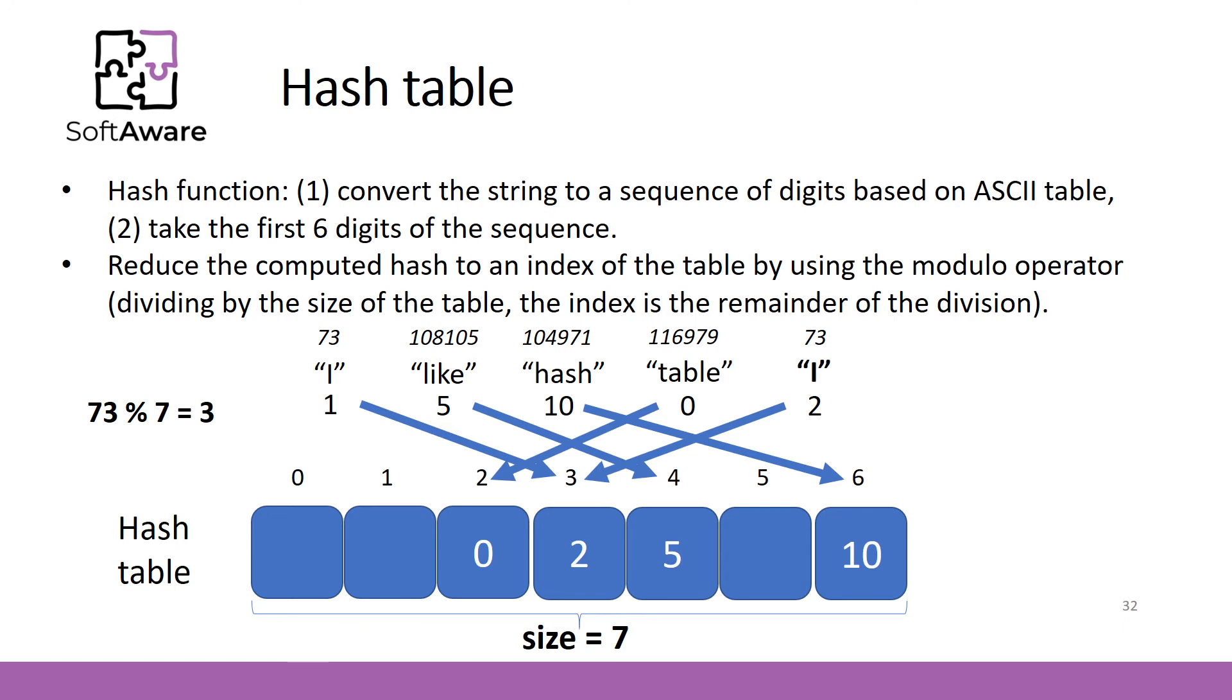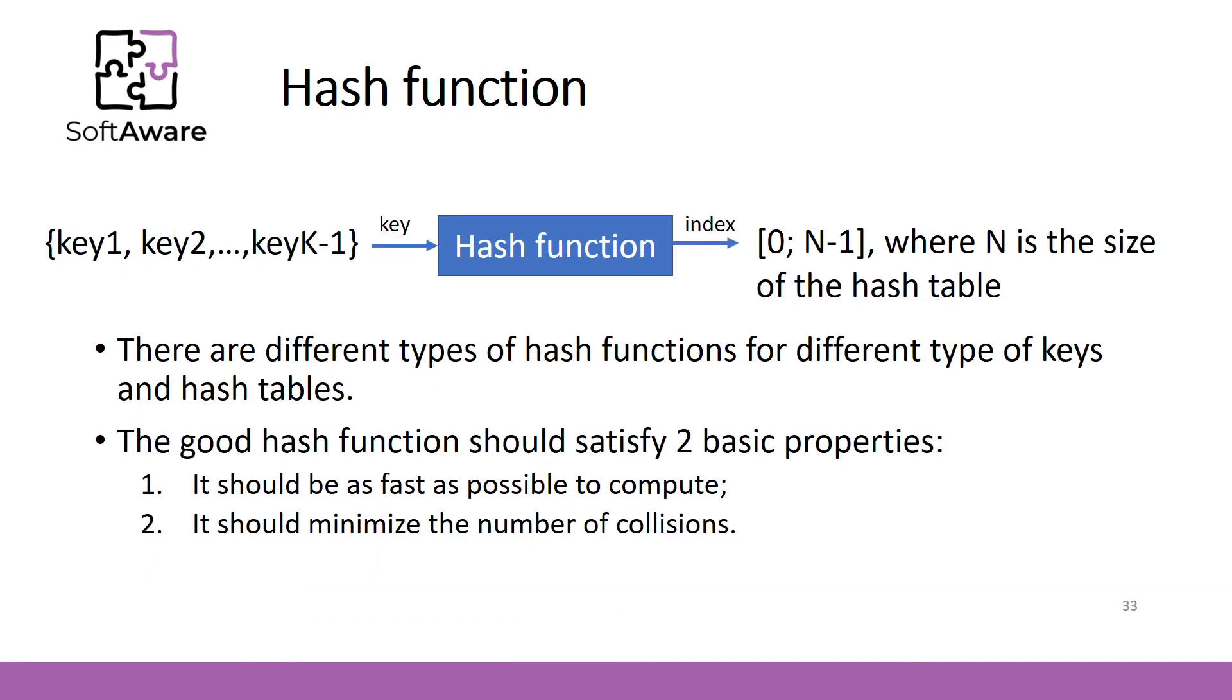Although the hash function we used did not produce any collision, it still did not eliminate it entirely and there will be cases where collisions will occur. Let's talk about hash function in detail. As you already know, the hash function should map the different keys to different indexes of the underlying array of the hash table. You also know that there are a lot of different hash functions applied for different type of keys and hash tables. The good hash function itself should satisfy two basic properties. First, it should be as fast as possible to compute and second, it should minimize the number of collisions.